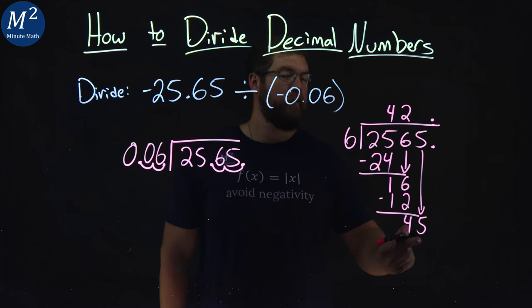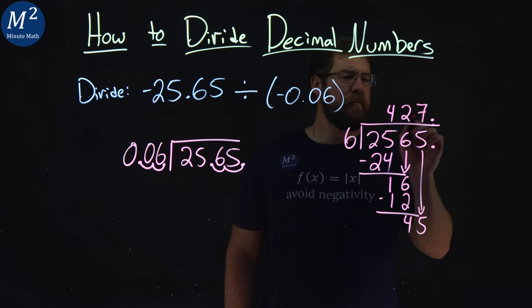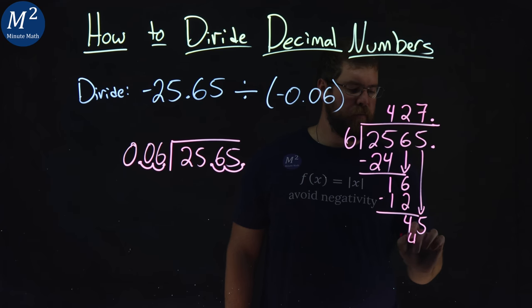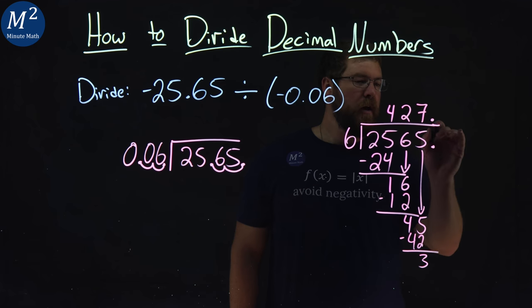6 goes into 45. If I go 7 times, 7 times 6 is 42. Subtract. Get a 3. Got to keep going.